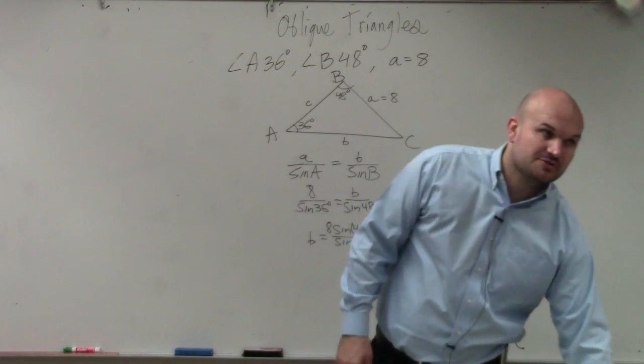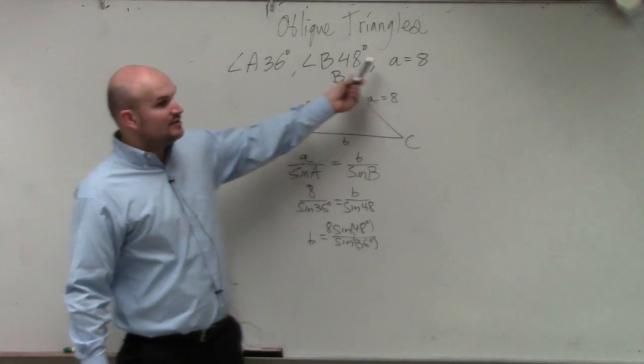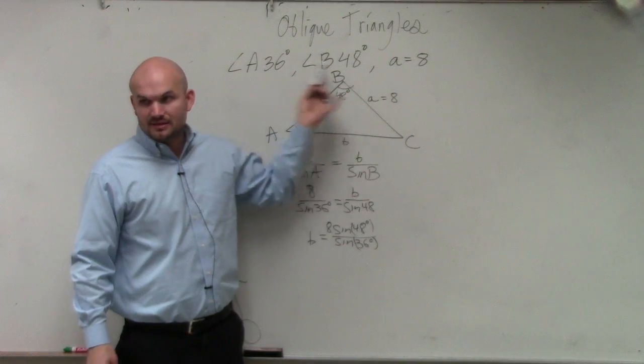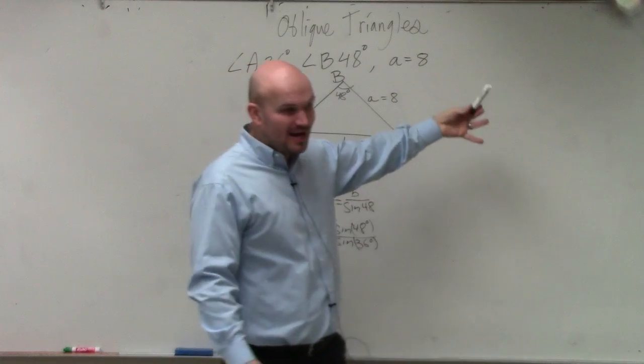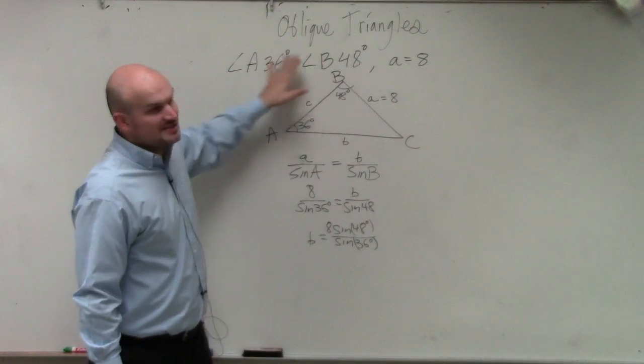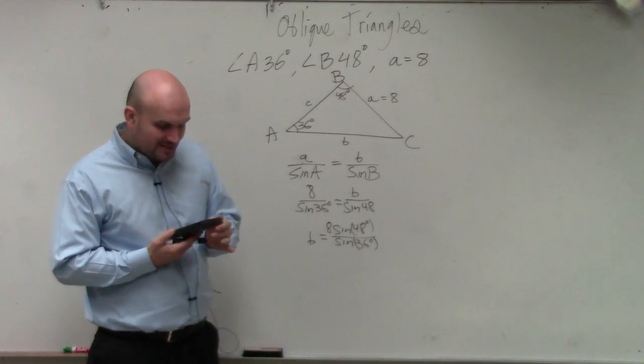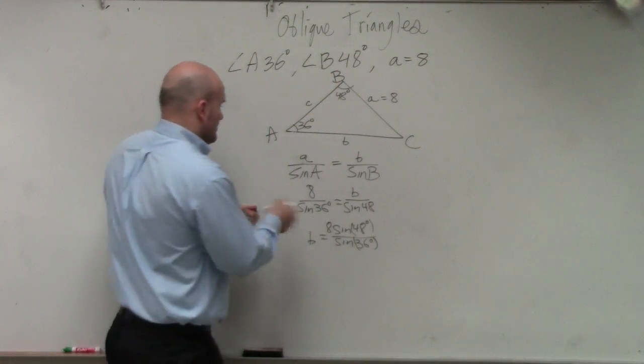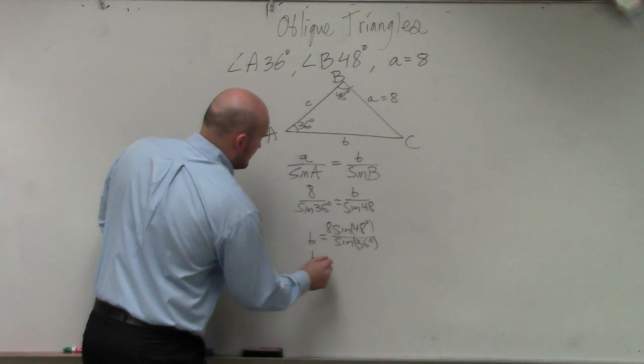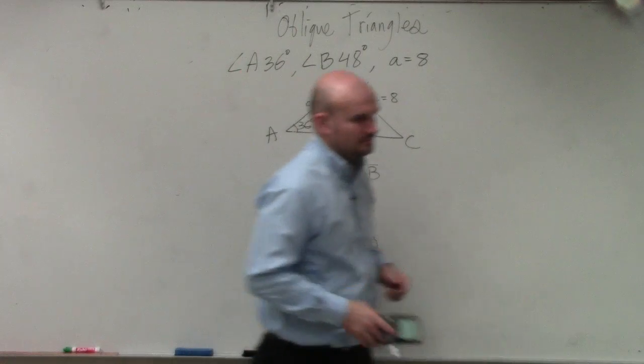For these problems, we're going to round to the tenth. Or if the problem is rounded to a different decimal, see here, these are rounded to the whole number, correct? So unless it tells you otherwise, always round it to the significant digit of the problem. Since there's no decimals here, we're going to round to the nearest whole number, unless it tells you otherwise. So this one is going to be approximate b is approximate 10.